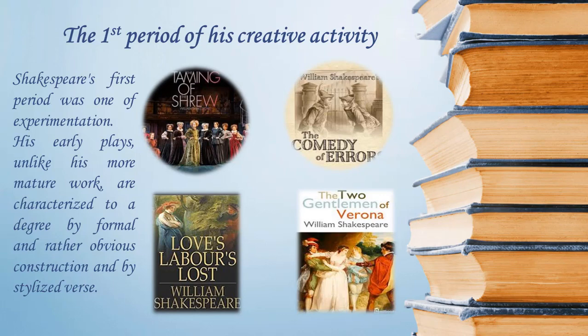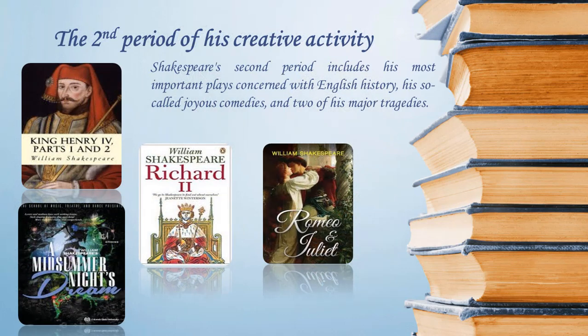Shakespeare's second period includes his most important plays concerned with English history, his so-called joyous comedies, and two of his major tragedies. In this period his style and approach became highly individualized. The second period historical plays include Richard II, Henry IV parts 1 and 2, and Henry V. Richard II is a study of a weak, sensitive, self-dramatizing but sympathetic monarch who loses his kingdom to his forceful successor, Henry IV.